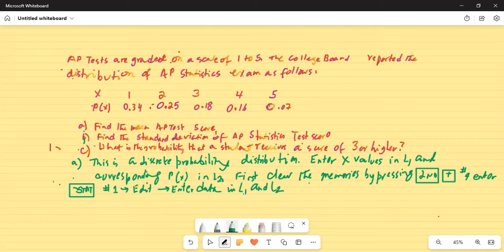So X data go in L1 while the probability values go in L2. So stat 1, in L1 the scores are 1, 2, 3, 4, and 5. And then the corresponding probabilities in L2: 0.34, 0.25, 0.18, 0.16, and then 0.07.